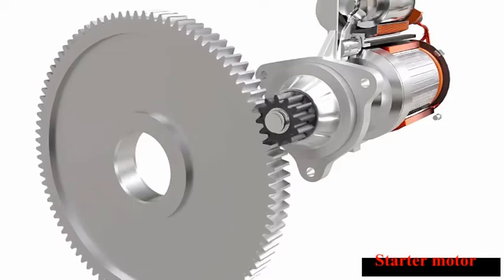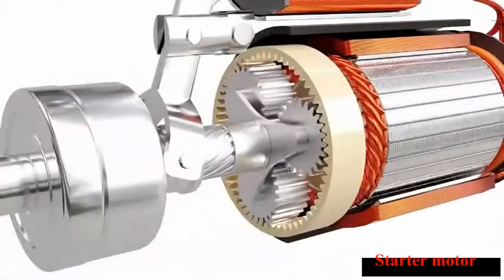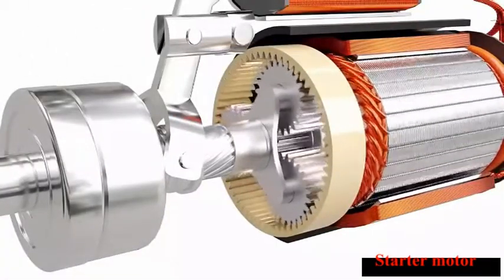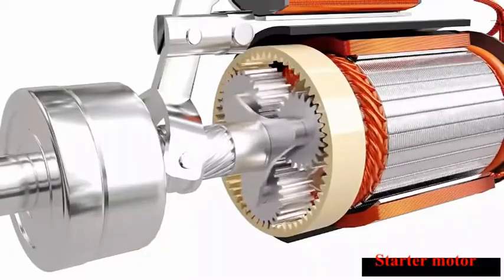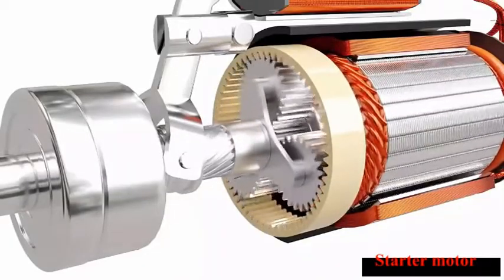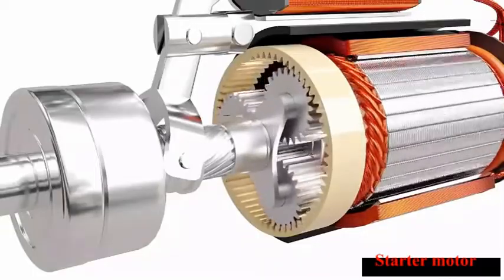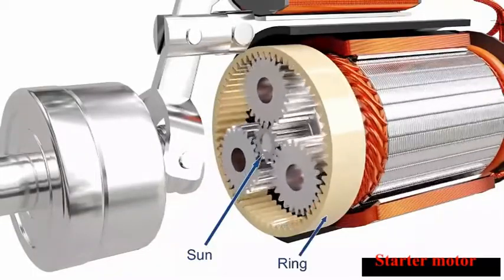So a planetary gear set is introduced to increase the torque further. Planetary gears are incredibly useful for large gear reductions with less weight and limited space. It consists of a sun gear, a ring gear, a carrier, and a set of planet gears.